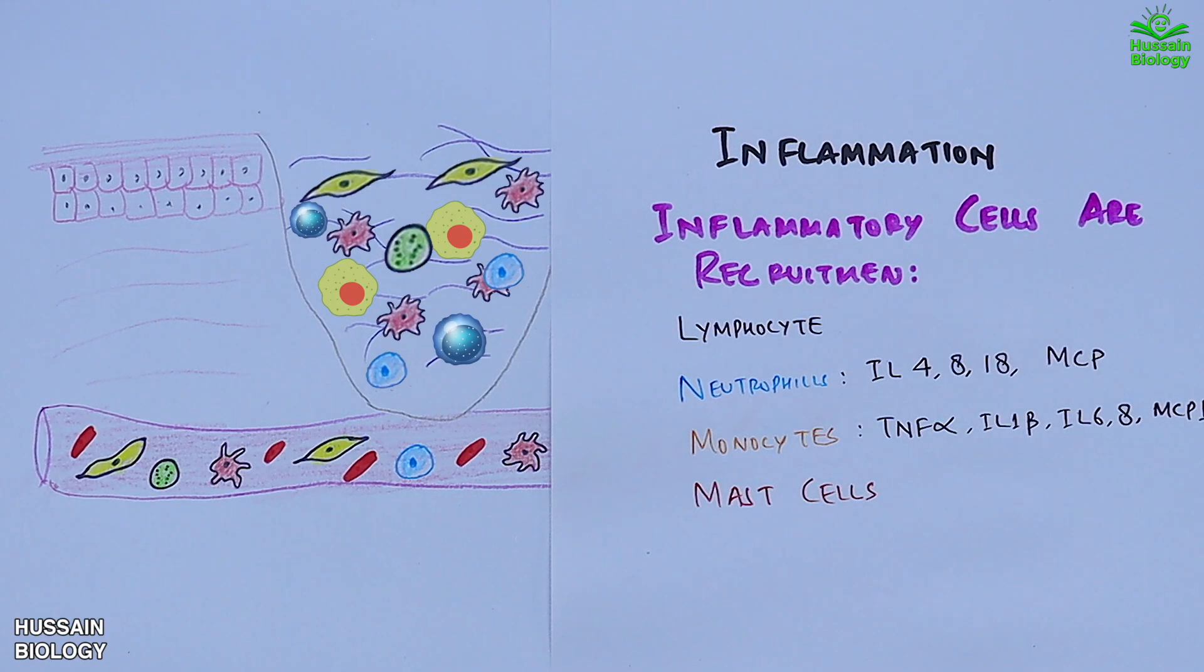The interleukins and TNF-alpha secreted here enhance inflammation, except the interleukin-4, which inhibits inflammation. But in the early stages of wound healing, the interleukin-4 is available in minute quantities.